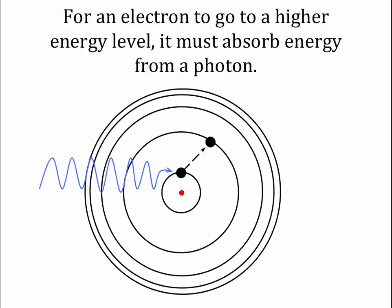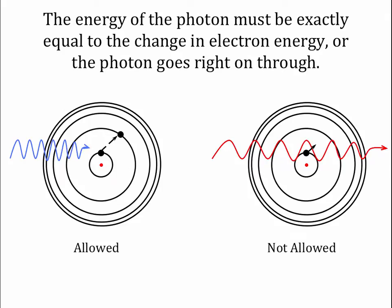A photon carries a certain amount of energy. If that amount of energy exactly equals the amount of energy an electron needs to jump to another energy level, there's a good chance it will absorb that photon and jump up. Because all that energy has gone to the electron, the photon is gone — it no longer exists. The energy of the photon must be exactly equal to the change in electron energy, or the electron doesn't even see it. For example, a blue photon has just the right energy to cause the electron to jump to the second level, but a red photon does not have enough energy, so the electron allows the red photon to pass right on by.